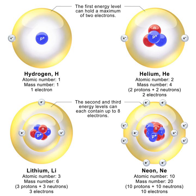Neither Rutherford nor James Chadwick at the Cavendish Laboratory in Cambridge were convinced by the gamma-ray interpretation. Chadwick quickly performed a series of experiments that showed that the new radiation consisted of uncharged particles with about the same mass as the proton. These particles were neutrons. Chadwick won the Nobel Prize in Physics for this discovery in 1935. Models for atomic nucleus consisting of protons and neutrons were quickly developed by Werner Heisenberg and others, and the proton-neutron model explained the puzzle of nuclear spins.